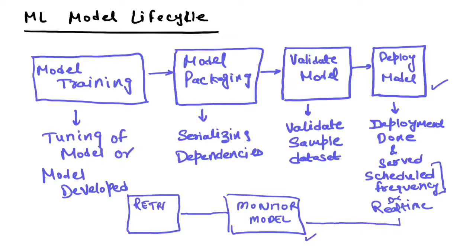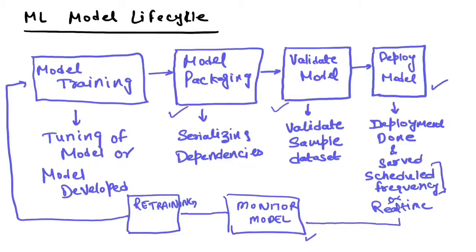Once you feel the model is not performing as expected, the next phase is retraining. This is similar to the original model training — you fine-tune again, change model parameters, and look for new data patterns. Then the life cycle repeats: you package the retrained model, validate it, deploy it, monitor it, and eventually retrain it again. Over time, you keep changing algorithms and parameters so your model gives the best predictions.